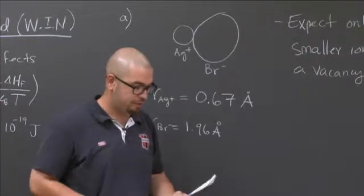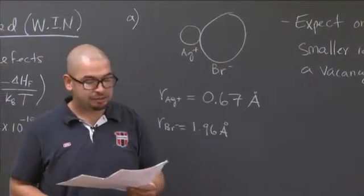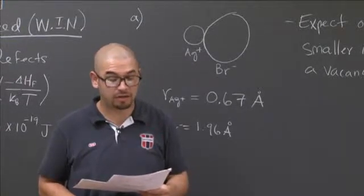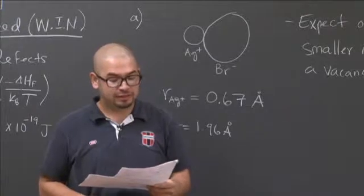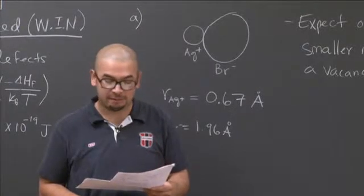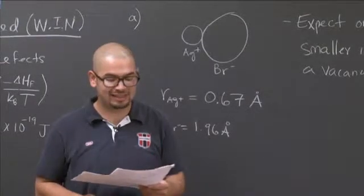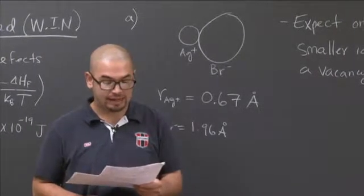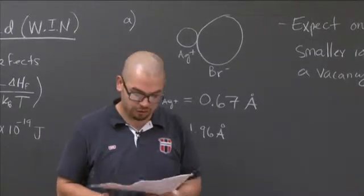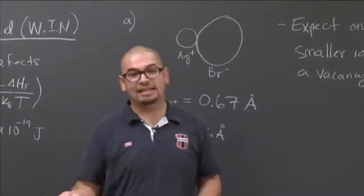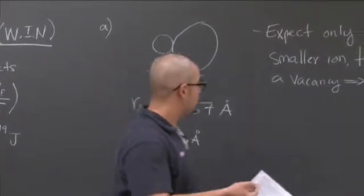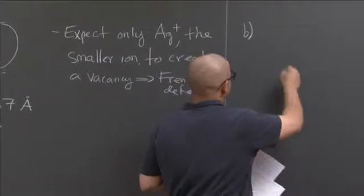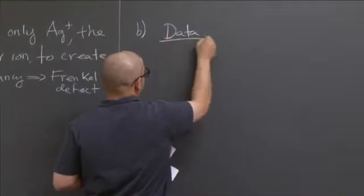Part B reads, calculate the temperature at which the fraction of Frankel defects in a crystal of silver bromide exceeds one part per billion. The enthalpy of Frankel defects of formation, delta H_f, has a value of 1.16 electron volts per defect. And the entropic prefactor, A, has a value of 3.091. Now, the way I will solve this problem is that the first thing I would do is write down what my data is.